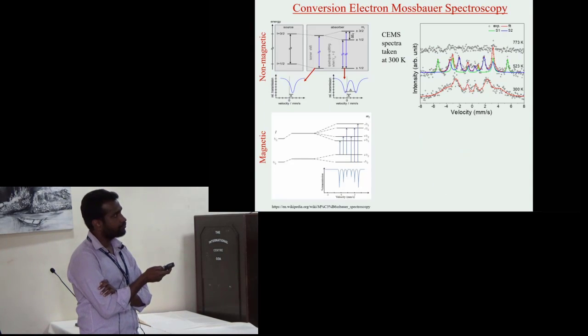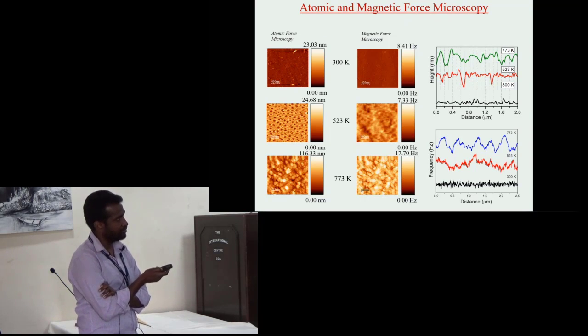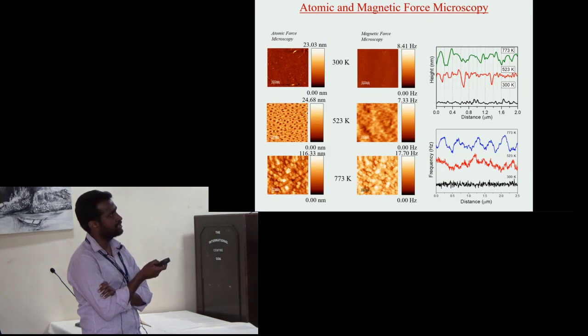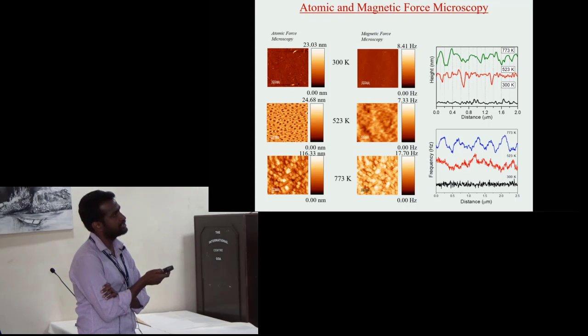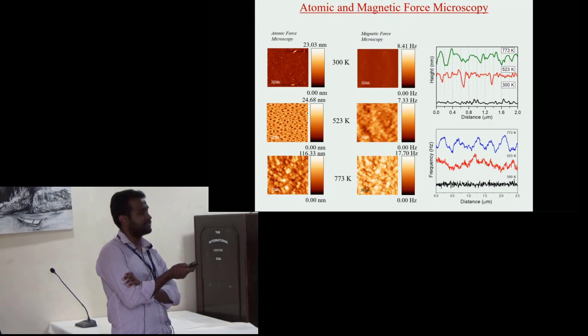That is more clear from their height distribution. In a similar way the MFM image shows at room temperature and 773 Kelvin magnetic domains are similar to their grains, but at 523 Kelvin the magnetic domains are completely different, that shows existence of some multi-component phase at 523 Kelvin.